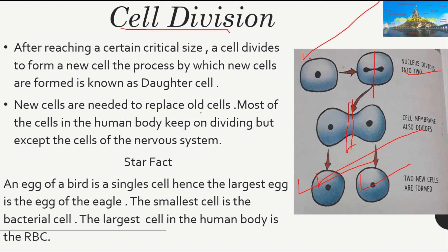We need new cells because cells die after a particular time — when you fall, cells die, and germs and pathogens also cause cell death. To replace those cells, we need new ones. Most cells in the human body are replaced, except the cells of the nervous system. That is why injury to the nervous system, like the brain or spinal cord, is very risky — unlike a bone fracture, which the body can recover from.